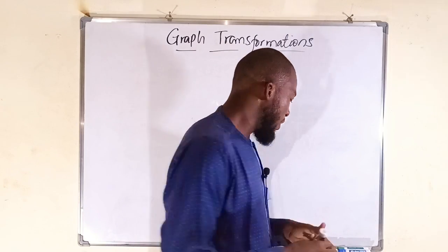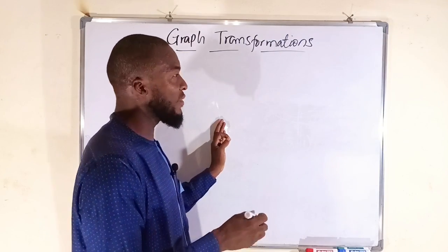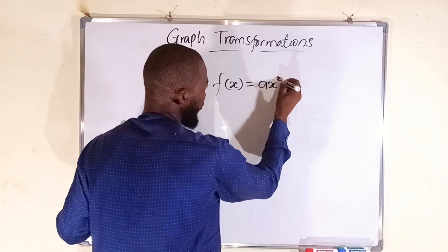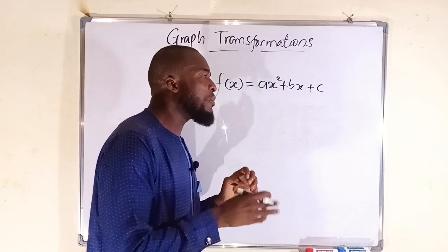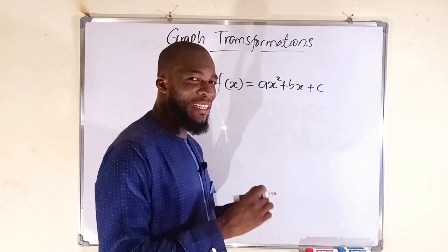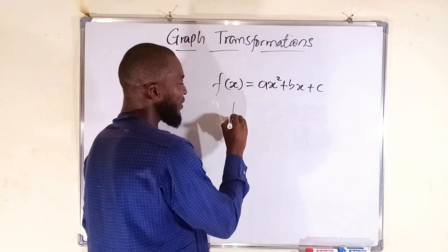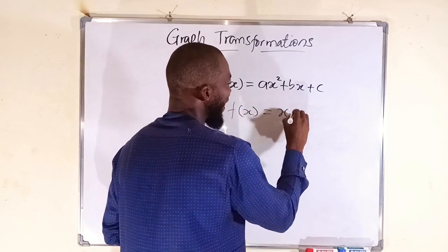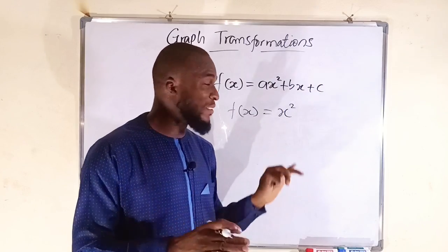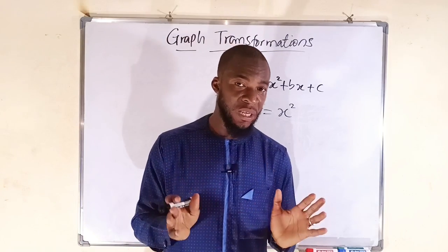You should understand that we have a mother function as well as transformed functions. For a quadratic function, the general form is f(x) = ax² + bx + c. I will try to avoid using standard textbook terminologies and explain this intuitively. The mother function is simply f(x) = x². Whatever else you see is a transformation from this mother function to an entirely different format.